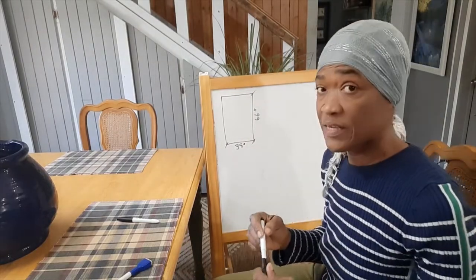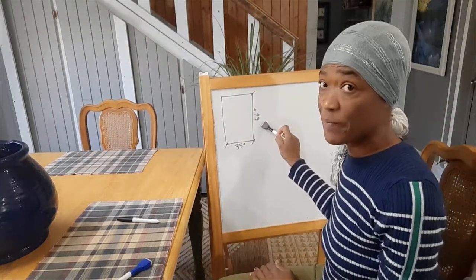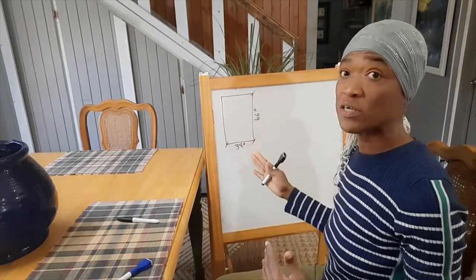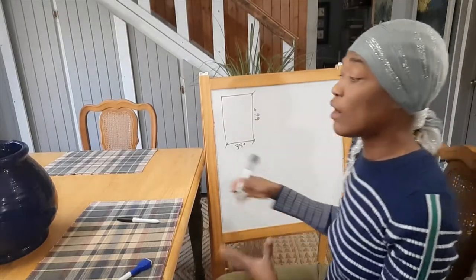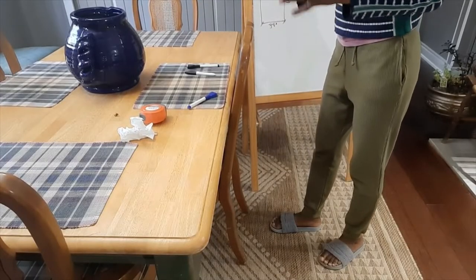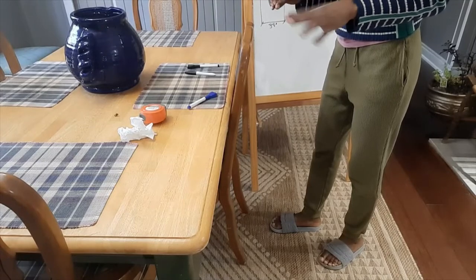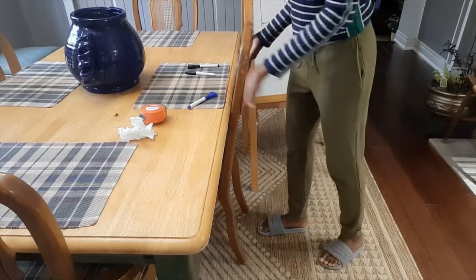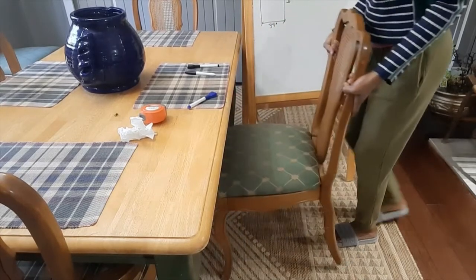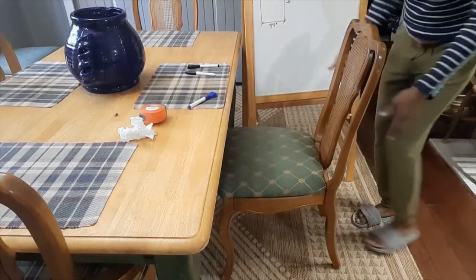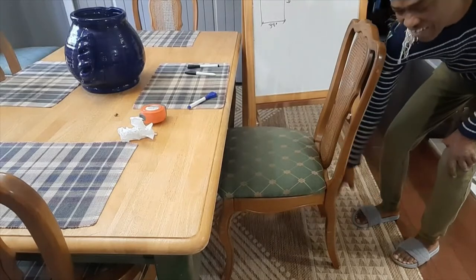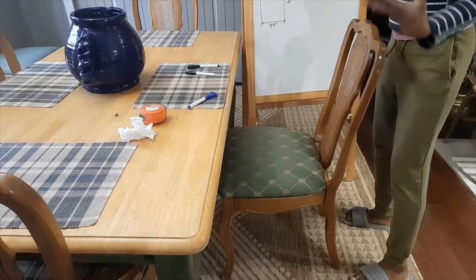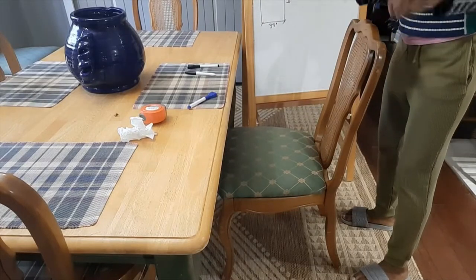The next step is to add increments to our table that will accommodate the chair when it is pulled out. I've seen videos before that show how to measure for your rug. And they will say, put the chair up to the table, then pull the chair out, then put tape on the ground and do the same thing for the other side and then do some type of a measurement.